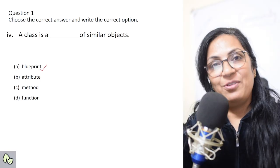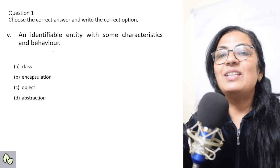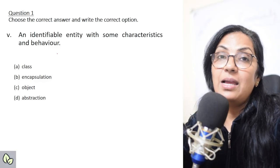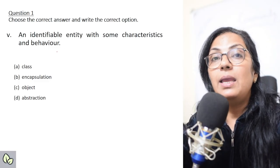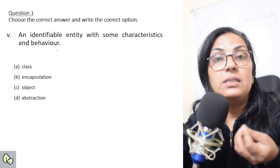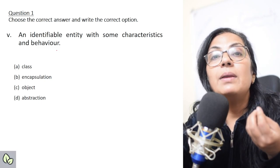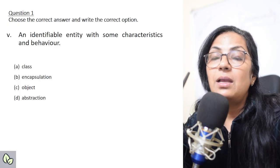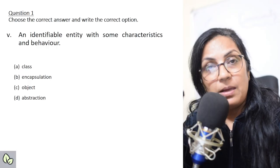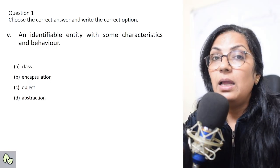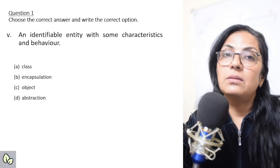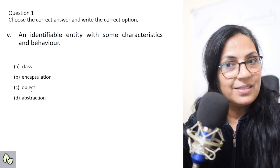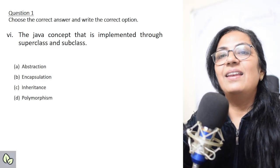The next question: 'An identifiable entity with some characteristics and behavior.' An identifiable entity means an entity which has some identity of its own — this pen, this mic, a speaker — everything has got some identity: the color, the weight, the shape, the size. That entity is termed as an object.